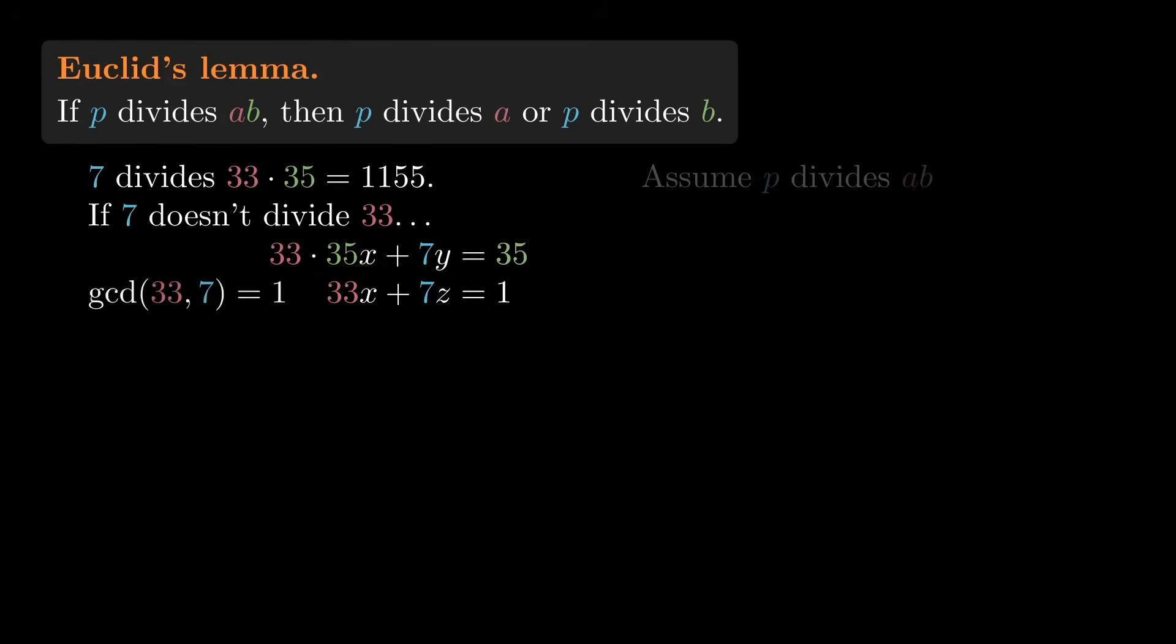In other words, their GCD would have to be 1. This is a really good sign, because this is exactly the assumption we made, that 7 doesn't divide 33. We just need a way to connect 33 and 7 to their GCD, 1.